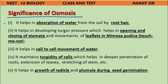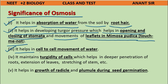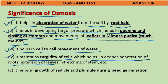Significance of osmosis: 1) It helps in absorption of water from the soil by root hairs. 2) It helps in developing turgor pressure, which helps in opening and closing of stomata and movements of leaflets in Mimosa pudica (touch-me-not). 3) It helps in cell-to-cell movement of water. 4) It maintains turgidity of cells, helping in deeper penetration of roots, extension of leaves, and stretching of stem. 5) It helps in growth of radicles and plumules during seed germination.